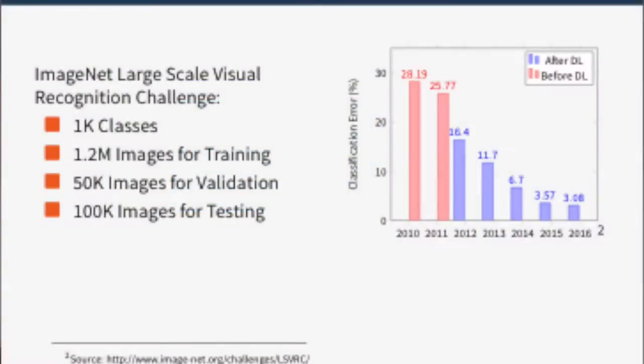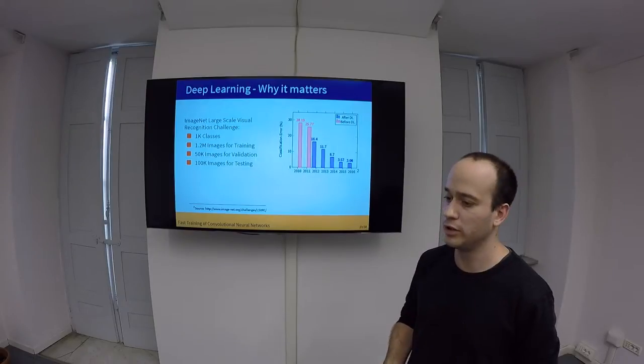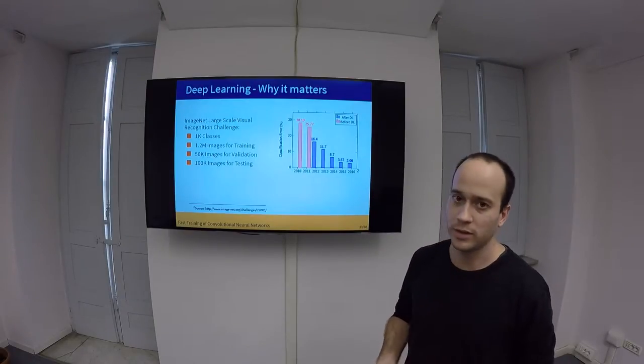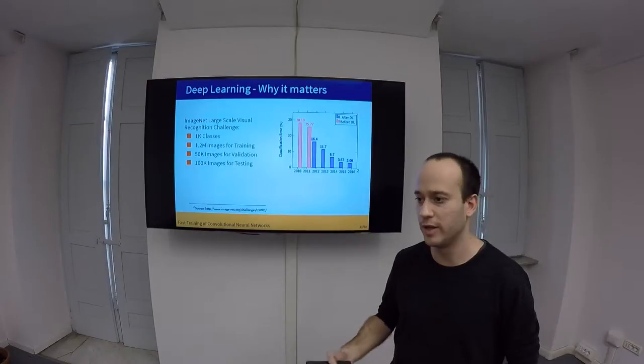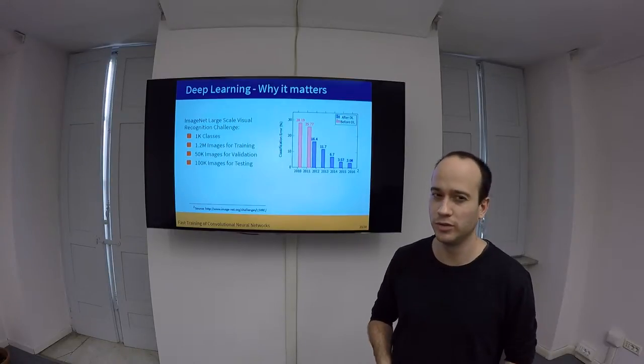Before deep learning, in tasks such as the ImageNet Large Scale Visual Recognition Challenge, which is an international challenge for object classification, detection, and also segmentation, improvements were very scarce.